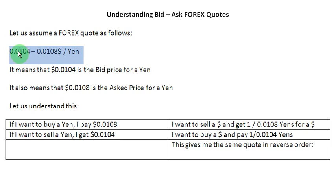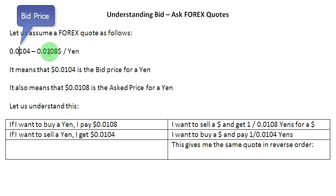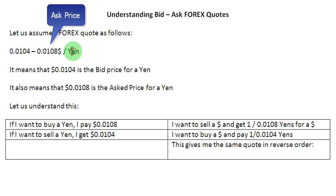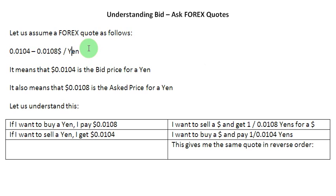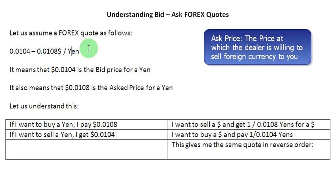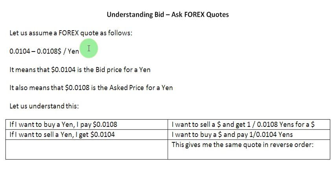The first number in this quotation is the bid price, and the second number, 0.0108, is the ask price in terms of dollars for a yen. The bid price is the price that the dealer is willing to pay you when you have some foreign currency to sell. And the ask price is the price that the foreign exchange dealer is going to charge you when you have some foreign currency to buy.